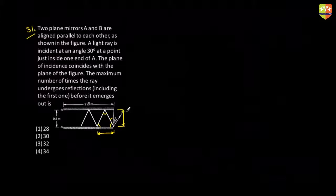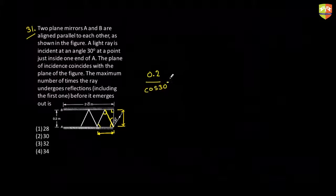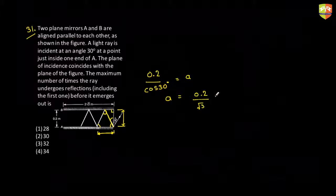This length I have is equal to 0.2, so in this right-angle triangle I can get the side of the equilateral triangle to be equal to 0.2 divided by cos 30. This is the side length, so 'a' will come out to be 0.2 divided by (√3/2), which is 0.4 divided by √3.